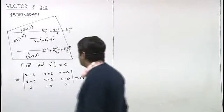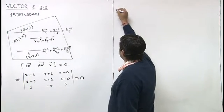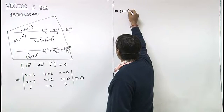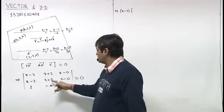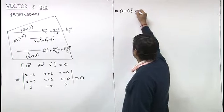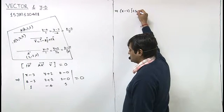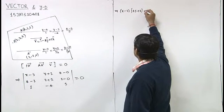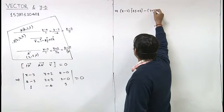This must be equal to 0. So this determinant is x minus 3 into 5 into 5, 25 and this is minus minus 8 minus 8 minus 8 minus y plus 2 into,